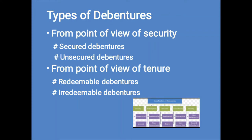The fourth classification is from the point of view of the coupon rate: specific coupon rate debentures and zero coupon rate debentures. Specific coupon rate debentures are circulated with a mentioned rate of interest. Zero coupon rate debentures do not normally carry a particular rate of interest. In order to compensate the investors, such debentures are circulated at a considerable discount, and the difference between the nominal value and the circulated price is treated as the amount of interest associated with the duration of the debentures.